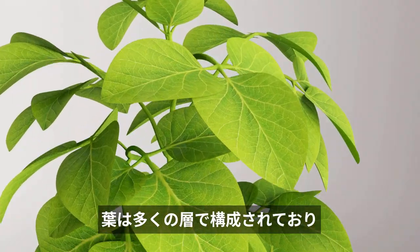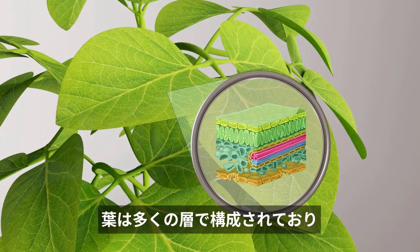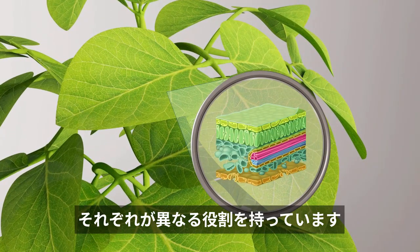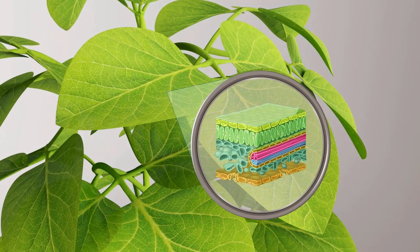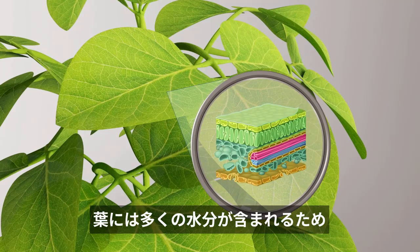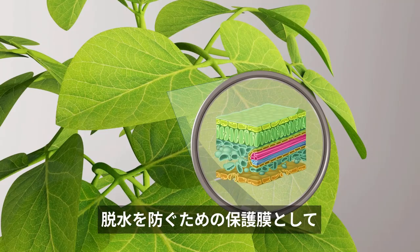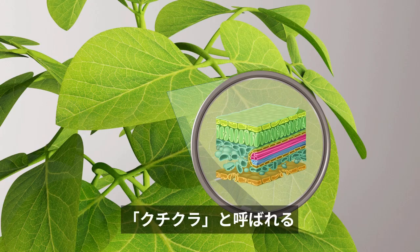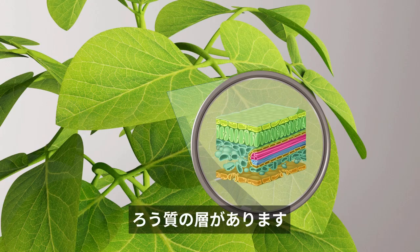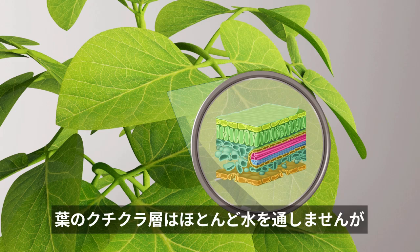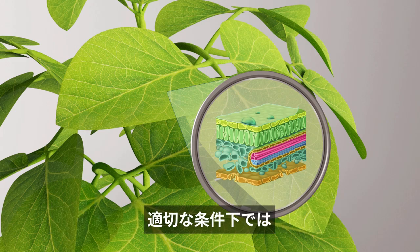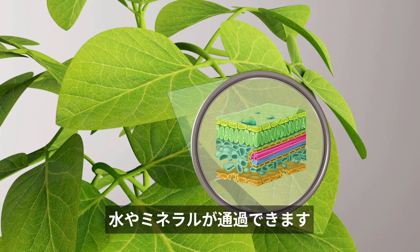Leaves are composed of many layers that all have different roles. As leaves contain a lot of water, they need a layer to protect them from dehydration. This waxy layer is called the cuticle. The leaf cuticle is almost watertight, but in the right conditions water and minerals can go through.